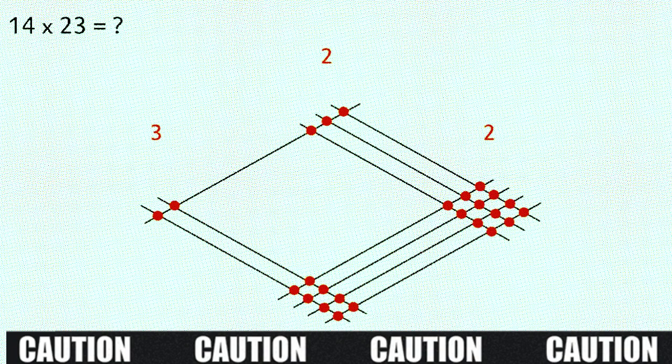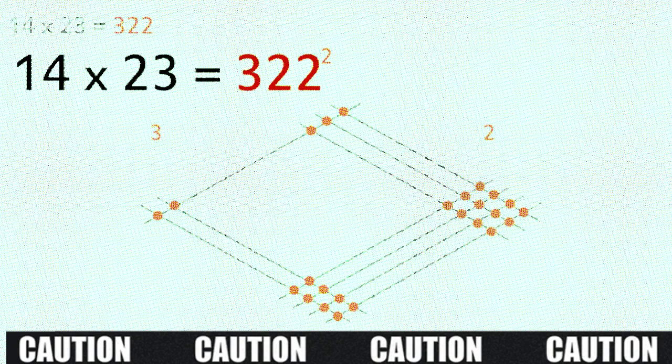And that gives us our answer. 3, 2, 2. 14 multiplied by 23 is 322.